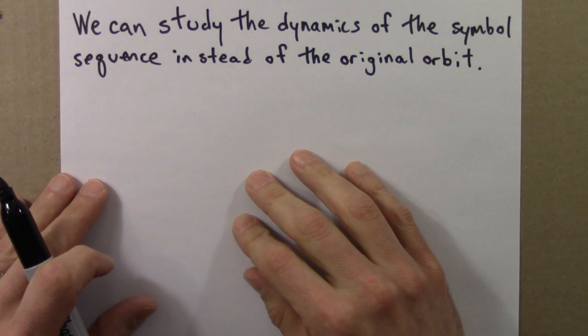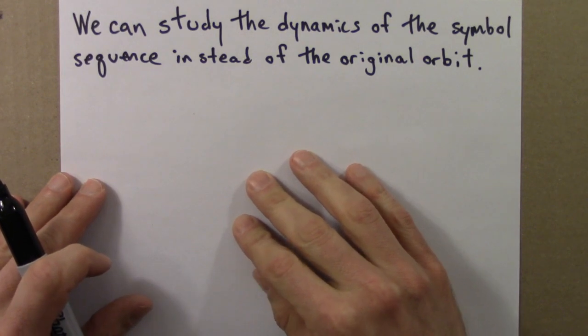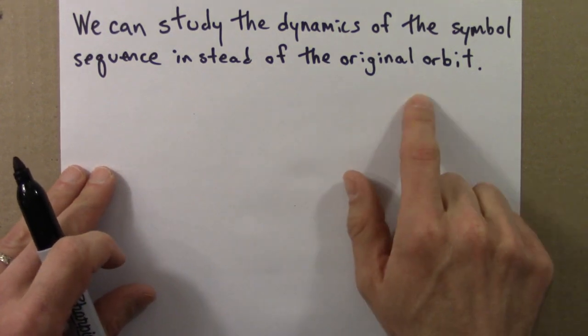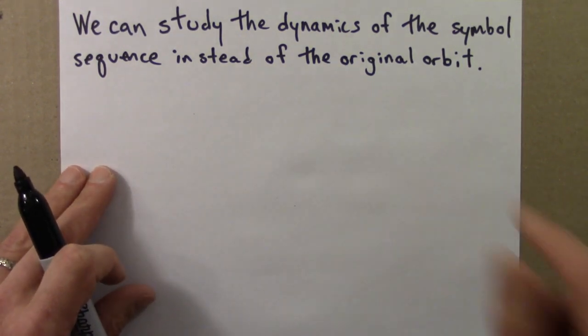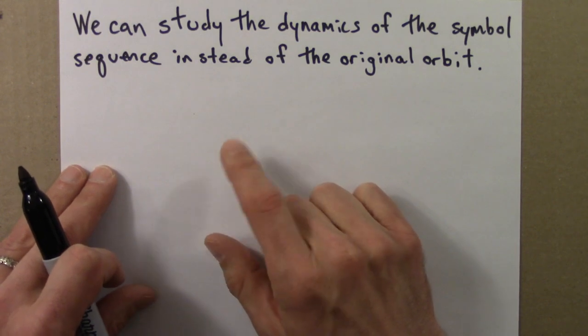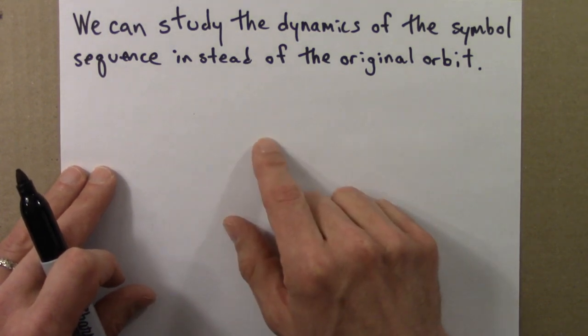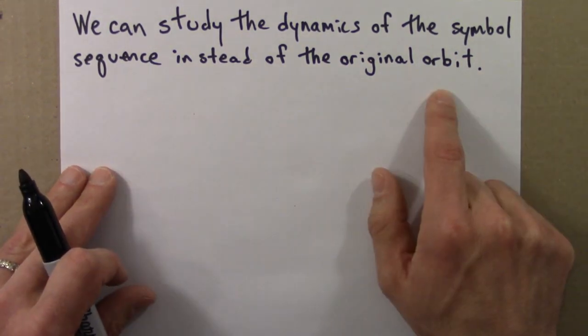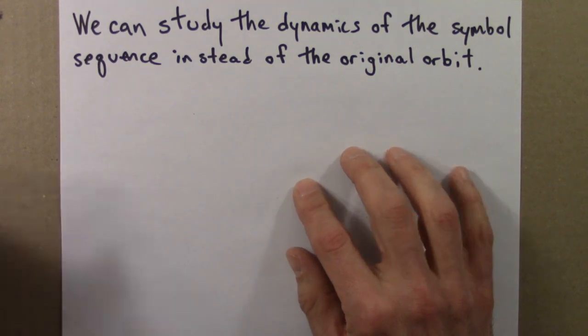Once we have a symbol sequence, the idea is that we can study the dynamics of the symbol sequence instead of the dynamics of the original orbit. And in many cases, one can show that the properties of the orbit are the same as the properties of the symbol sequence. Studying the symbol sequence is just as good as the original orbit.